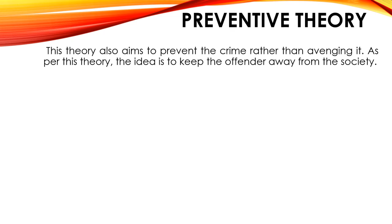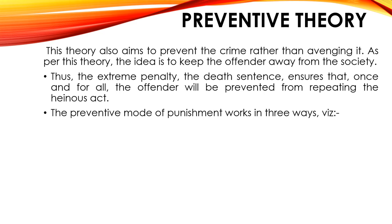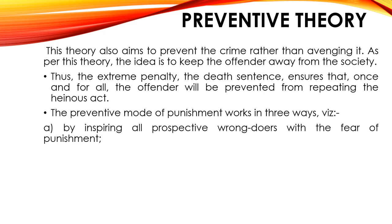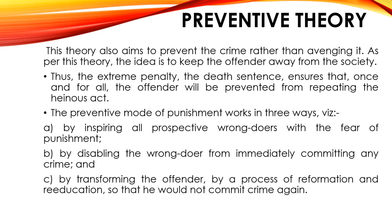The third theory is preventive. This theory also aims to prevent the crime rather than avenging it. As per this theory, the idea is to keep the offender away from the society. Thus, the extreme penalty like the death punishment ensures that once and for all the offender will be prevented from repeating the heinous act. The preventive mode of punishment works in three ways: first, by inspiring all prospective wrongdoers with the fear of punishment; second, by disabling the wrongdoer from immediately committing any crime; and third, by transforming the offender by a process of reformation and re-education so that he would not commit crime again. This theory has been criticized by some jurists.